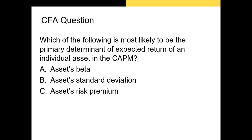Let's try one more CFA-level question, and then we'll get into regression. Which of the following is most likely to be the primary determinant of expected return of an individual asset in the CAPM? We have three choices: the beta, the standard deviation, or the risk premium.